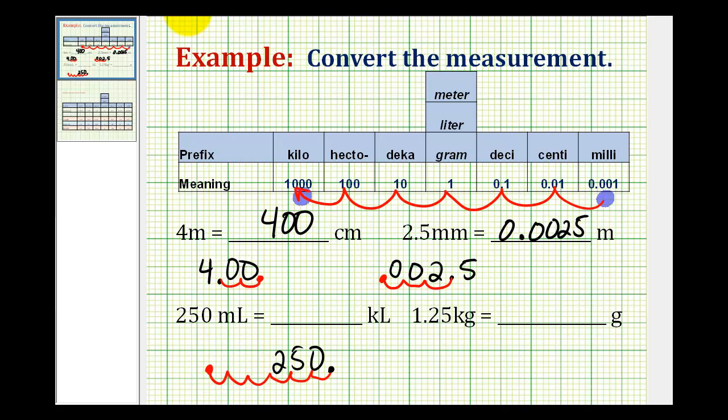So we'll have to add three extra zeros. 1, 2, 3, making 250 milliliters equal to 0.00025 kililiters. And we can leave off this last zero.